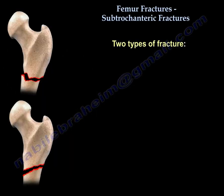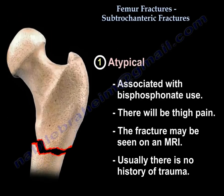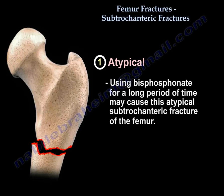There are two types of subtrochanteric fracture: atypical and typical. The atypical fracture is associated with bisphosphonate use; there is thigh pain, and the fracture may be seen on MRI. Usually there is no history of trauma.